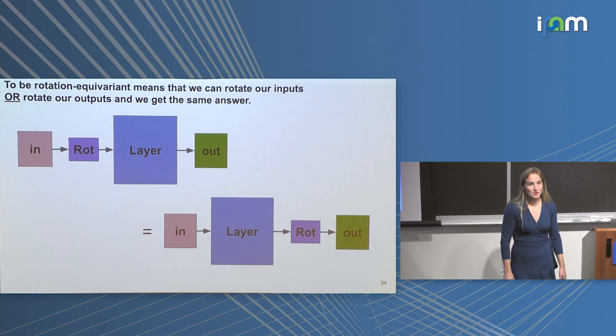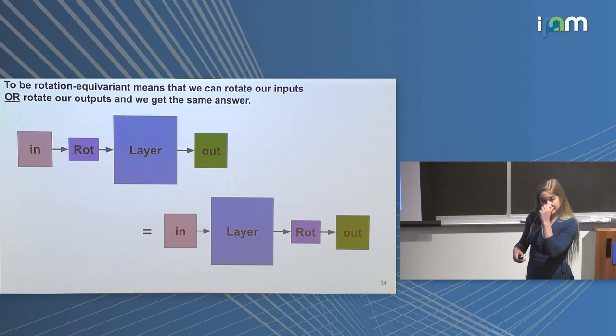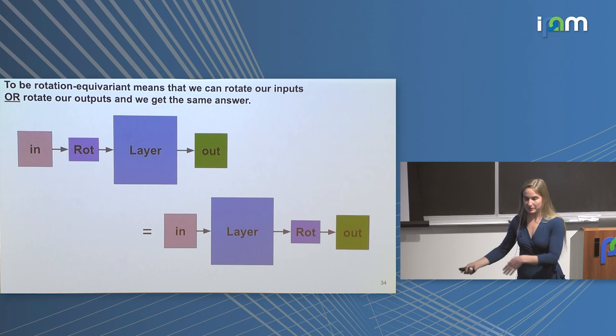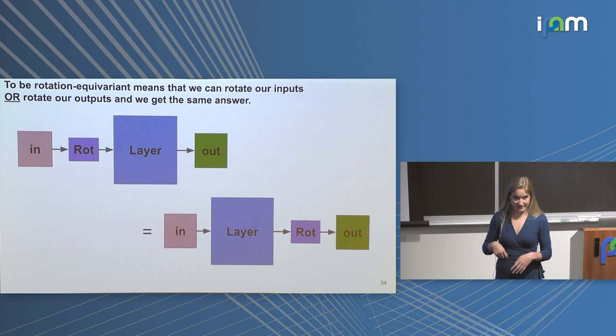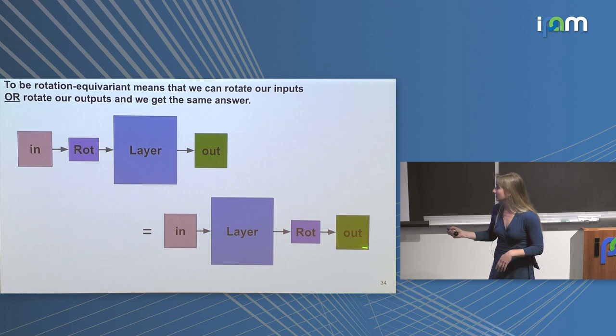For a neural network layer to be equivariant to Euclidean symmetry — specifically rotations — what we need is that we can either rotate the input and feed it through the network, or feed the input through the network and then rotate the output, and get the same result. Convolutional neural networks are already translation equivariant; adding rotation equivariance is the additional part.